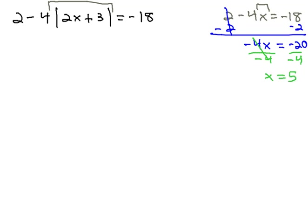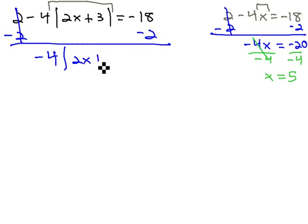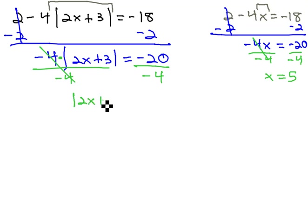Very similar with our absolute value problem, we get rid of the 2 positives with 2 negatives on both sides. This gives us negative 4 times the absolute value of 2x plus 3 equals negative 20. Now, to get the absolute value alone, we can divide both sides by that negative 4 to undo the negative 4 times. Now, the absolute value is alone, 2x plus 3 equals positive 5.